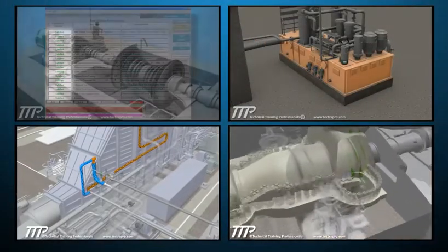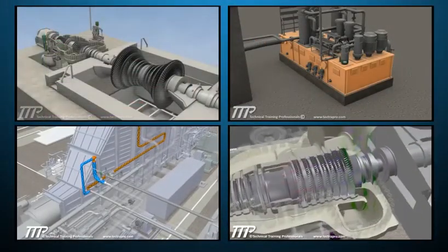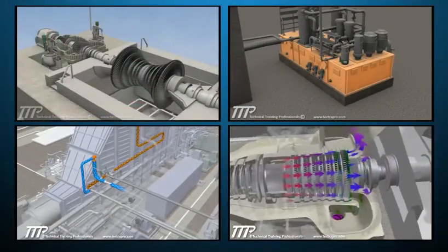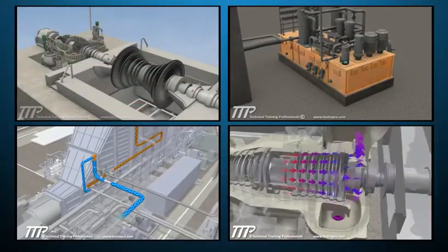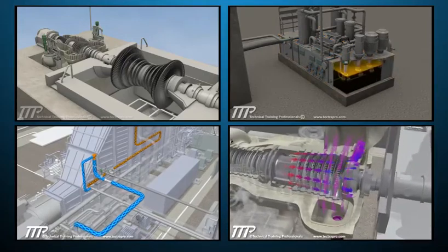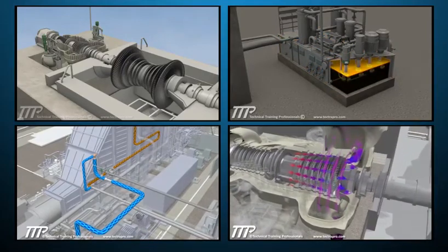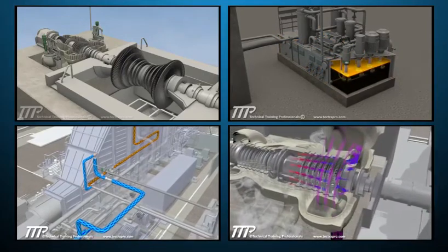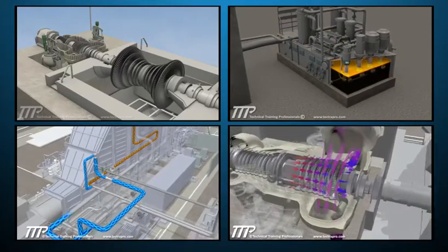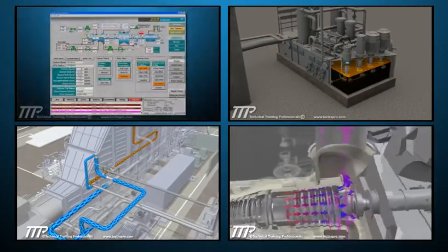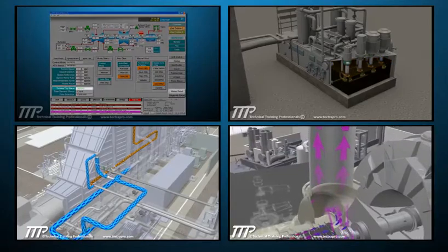The TTP D11 steam turbine course covers design, flow paths, function, and operation of the different sections of the turbine and generator.